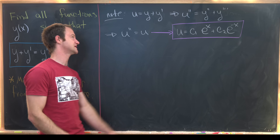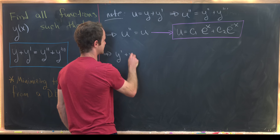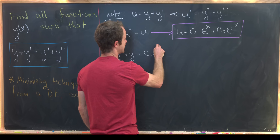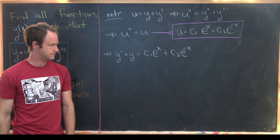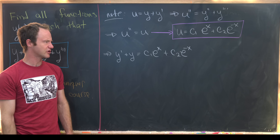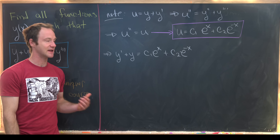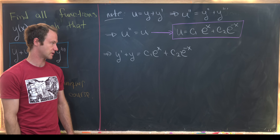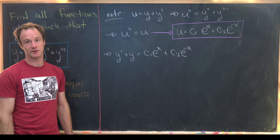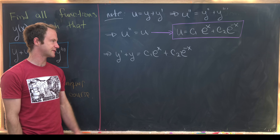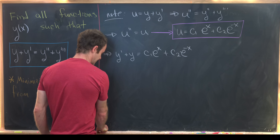Substituting back, we have y prime plus y equals c1 e to the x plus c2 e to the minus x. You could look at this and say that's a first order linear differential equation with a standard solution method. But I don't want to use that standard method — I want to use another trick that will transform this into an even simpler type of equation.